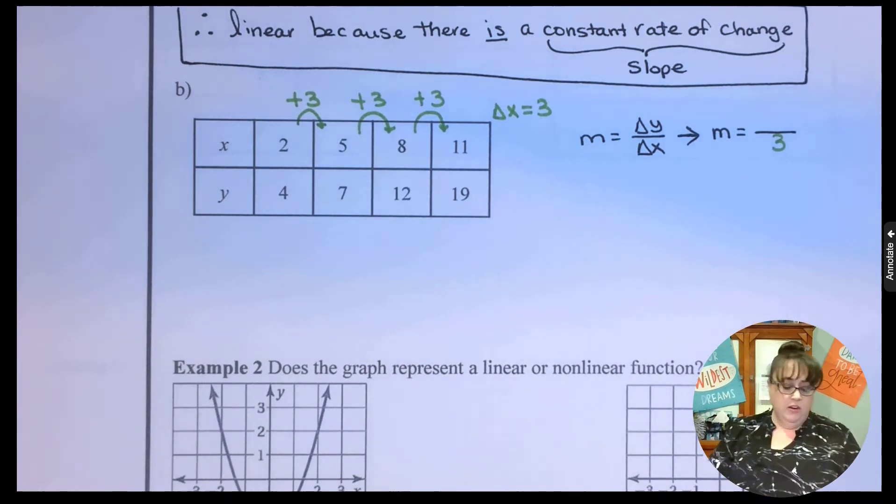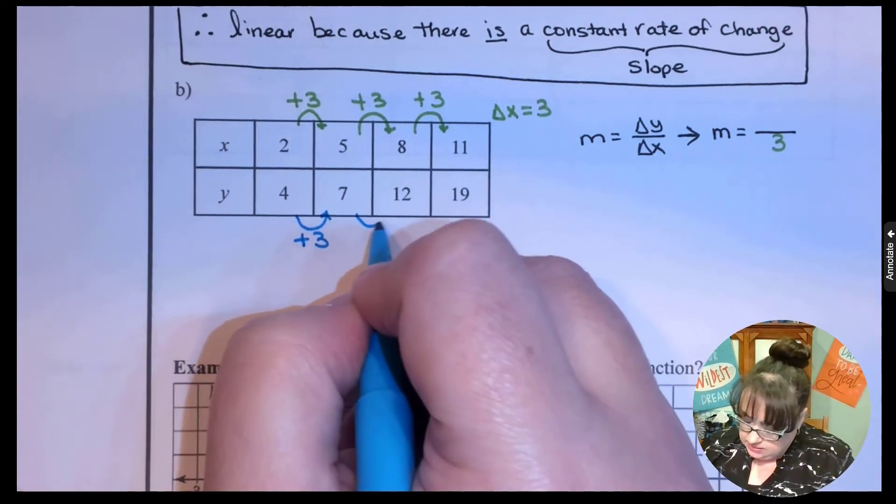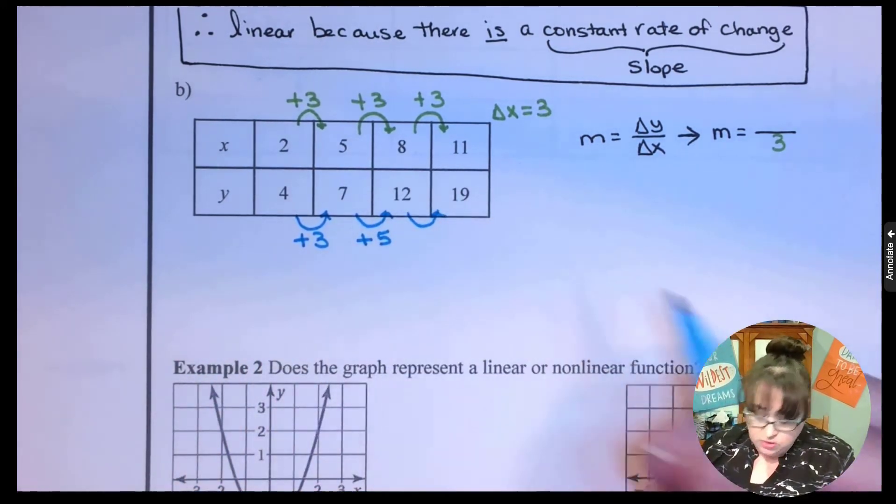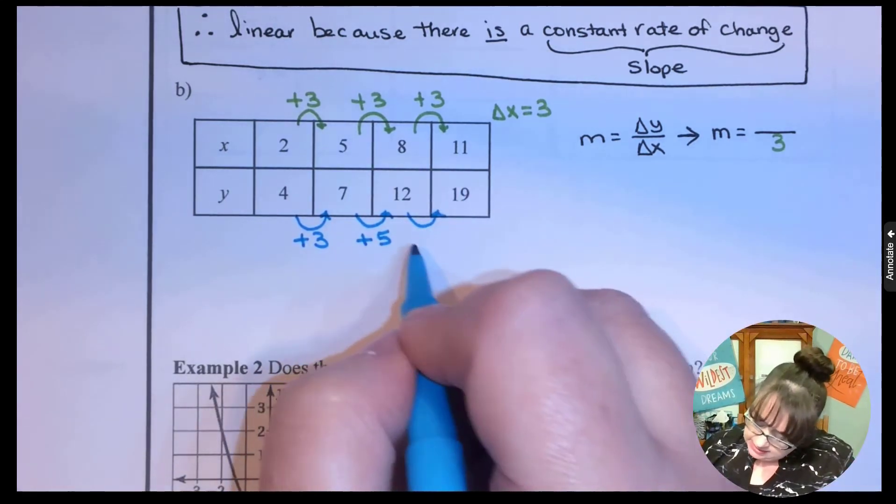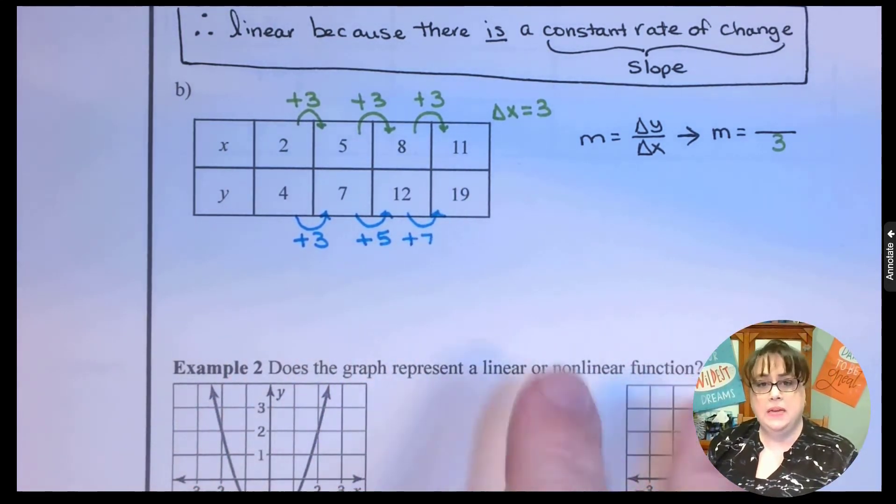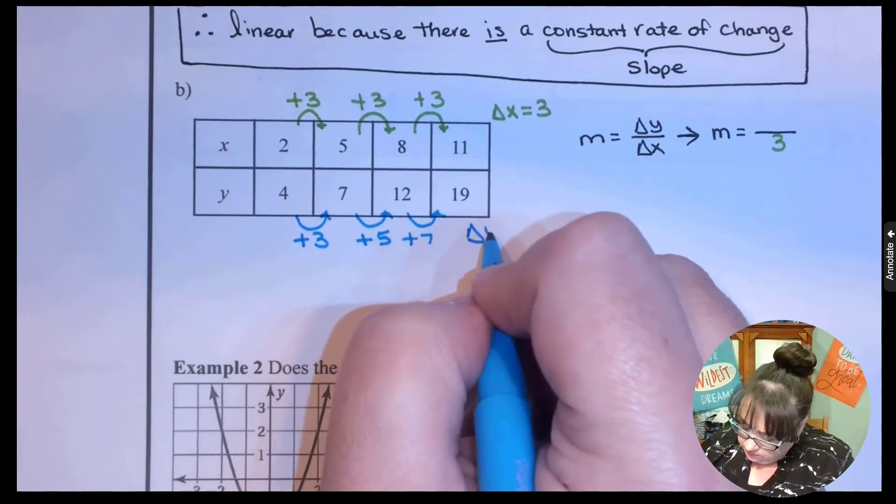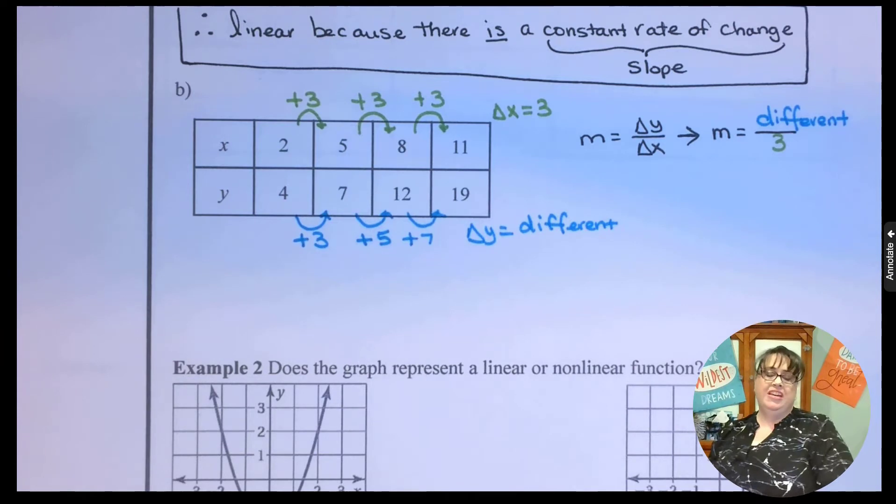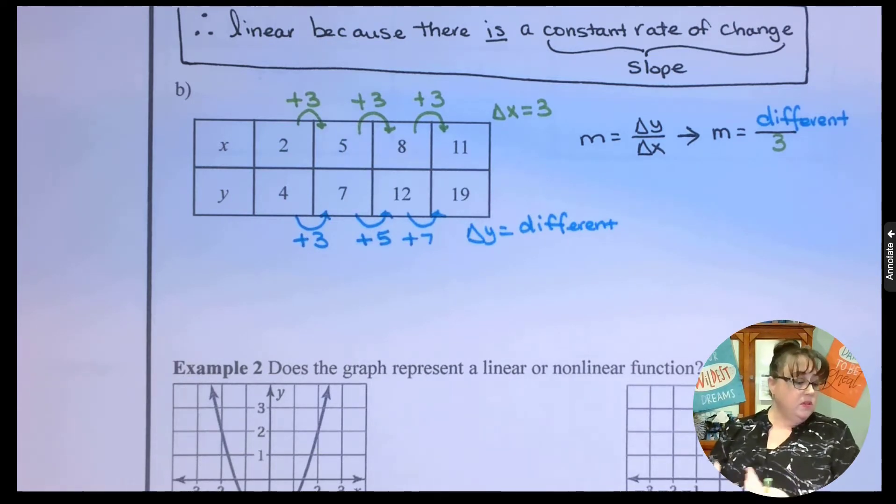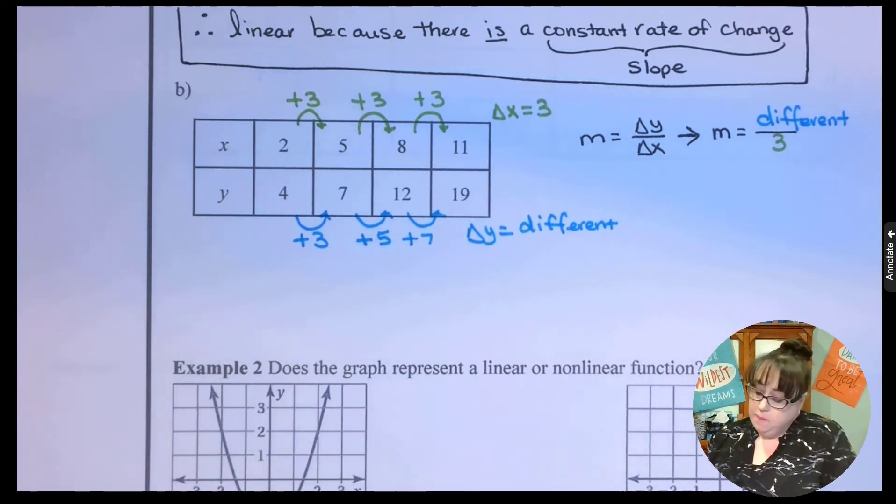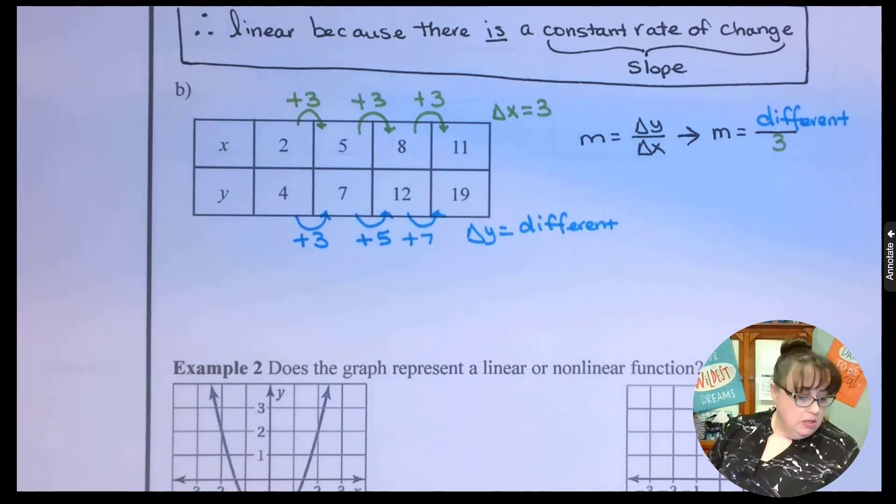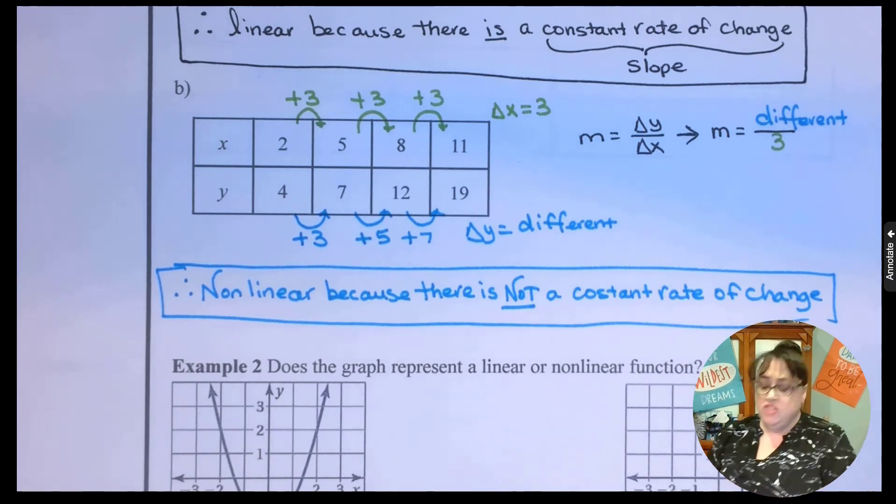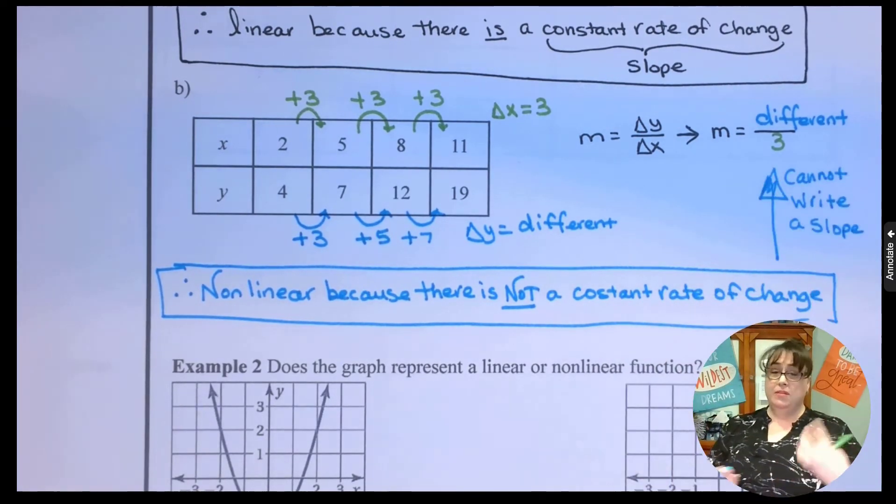So let's go look at our delta y. 4 to 7, that was 3. 7 to 12 is 5, and 12 to 19 is 7. I can't write a single number down—they're all different, which means I don't have a constant rate of change. I don't have a slope. So this is nonlinear. It's nonlinear because there is not a constant rate of change. I cannot write a slope. So that's how we do it with a table.